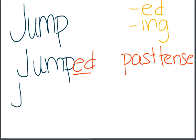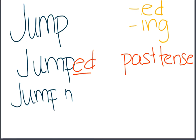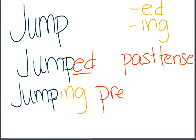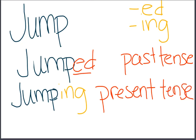Today, or now, we have 'jumping' — present tense. Not like a gift, present tense. We have: jump, jumped, jumping. Jump, jumped, jumping.